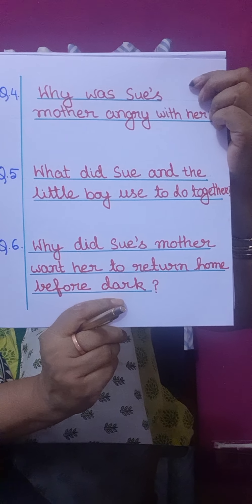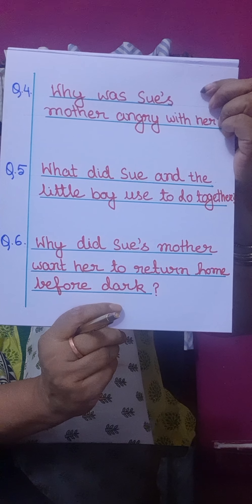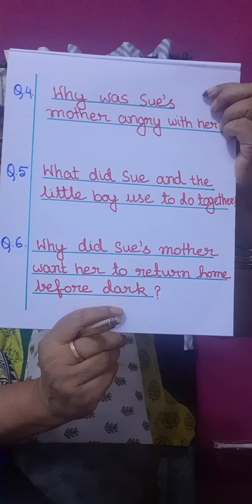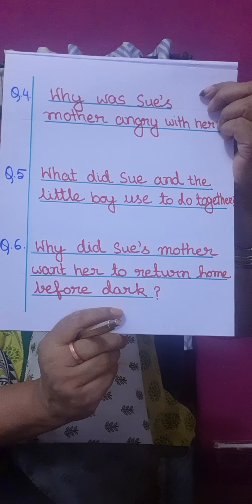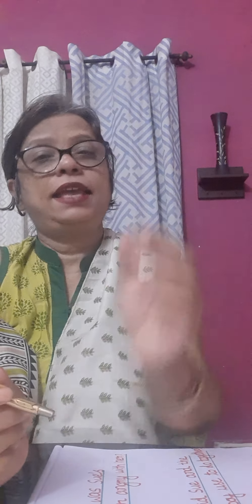The next question is: what did Sue and the little boy use to do together? Sue and the little boy used to play different types of games together. They danced in a circle singing 'Ring a Ring a Roses,' and sometimes they played covering their eyes with their hands.